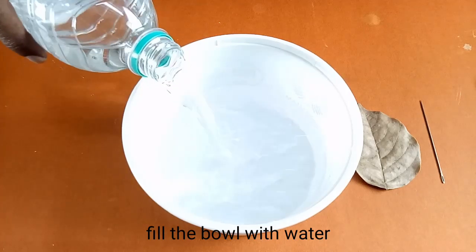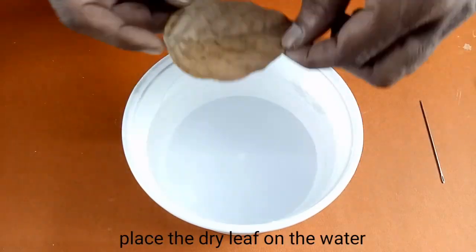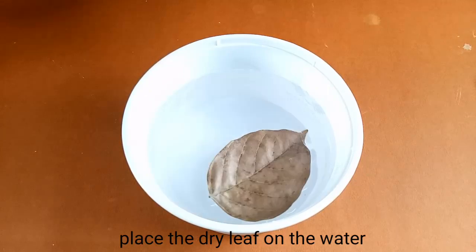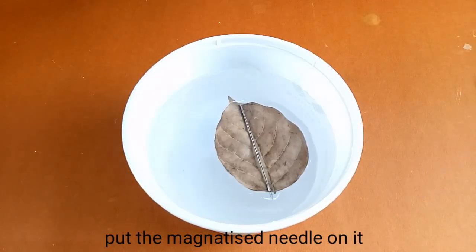Fill the bowl with water. Place the dry leaf on water. Put the magnetized needle on it.